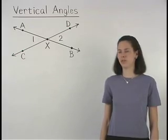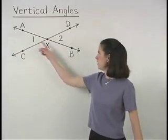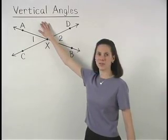In the diagram shown, angles 1 and 2 are called vertical angles.